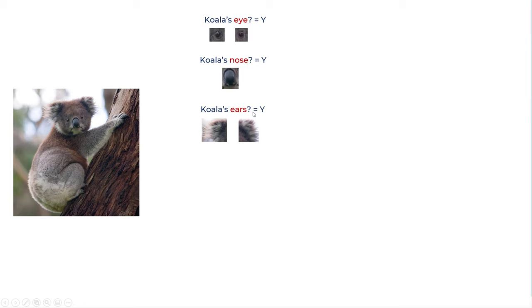In our brain, there are different set of neurons working on these different features and they are firing. They are saying, yeah, I found koala's ears, yes, I found koala's nose, and so on.